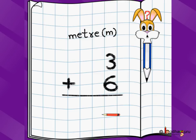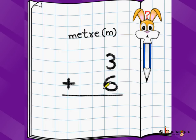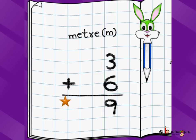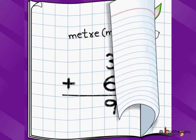We know length can be commonly measured using meters or centimeters. Let's say we have a cloth of 3 meters length and we got another cloth of 6 meters of length. So how much total cloth do we have? We write 3 plus 6. 3 meters plus 6 meters — 3 plus 6 is 9 — so we have 9 meters of cloth.